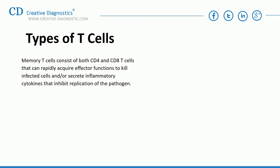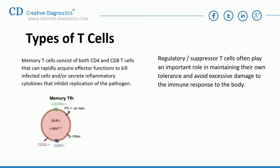Third, memory T-cells consist of both CD4 and CD8 T-cells that can rapidly acquire effector functions to kill infected cells and/or secrete inflammatory cytokines that inhibit replication of the pathogen. Fourth, regulatory/suppressor T-cells play an important role in maintaining self-tolerance and avoiding excessive immune damage to the body.